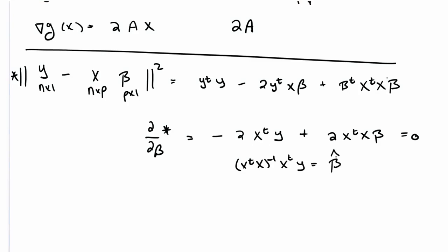we would get negative 2X transpose y plus 2X transpose X β. Setting that equal to 0, we get the solution X transpose X inverse X transpose y equals β hat. Let's say that's our estimator. Now let's leave for the time being the idea that X transpose X is invertible.